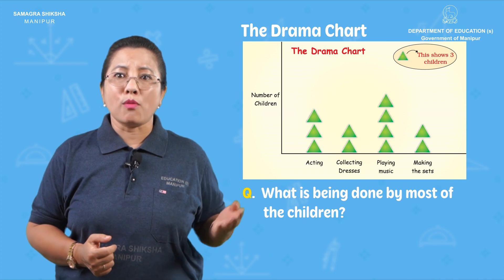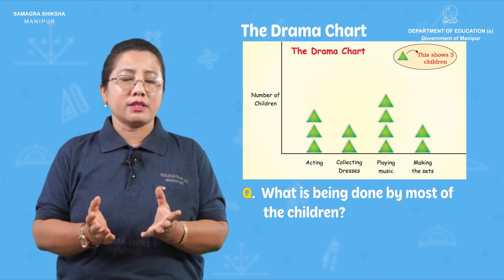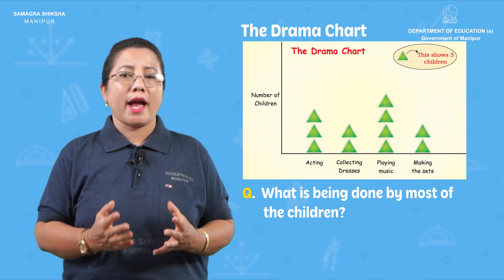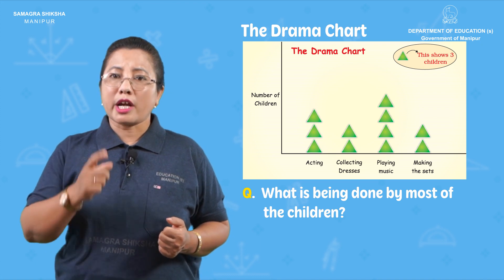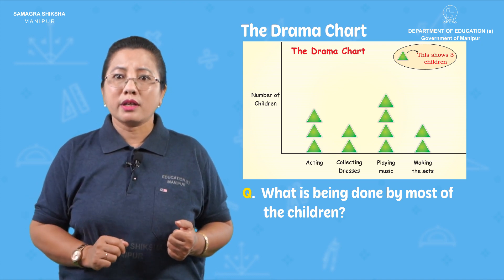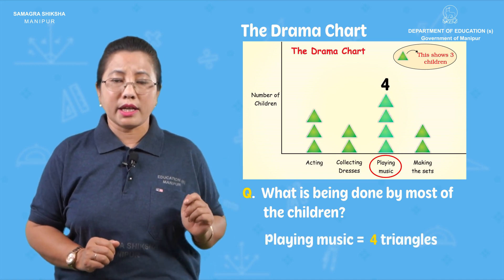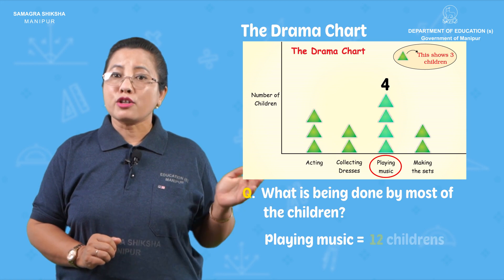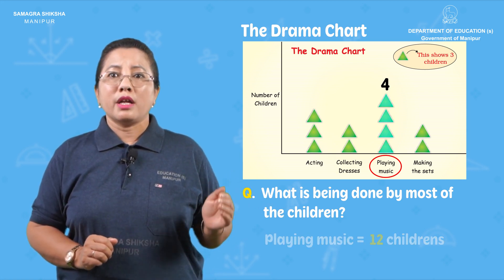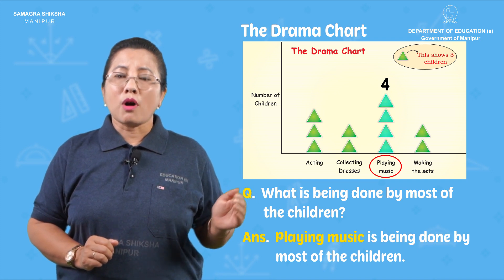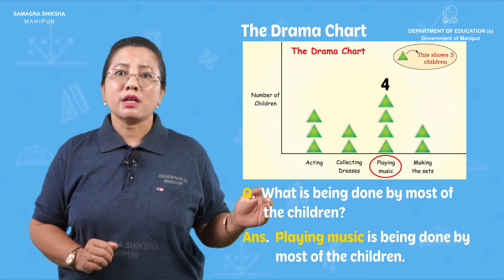What activity is being done by most of the children? Playing music has four triangles. Four into three, that is twelve children are involved in playing music. Therefore, the most number of children participating in any activity is in music.